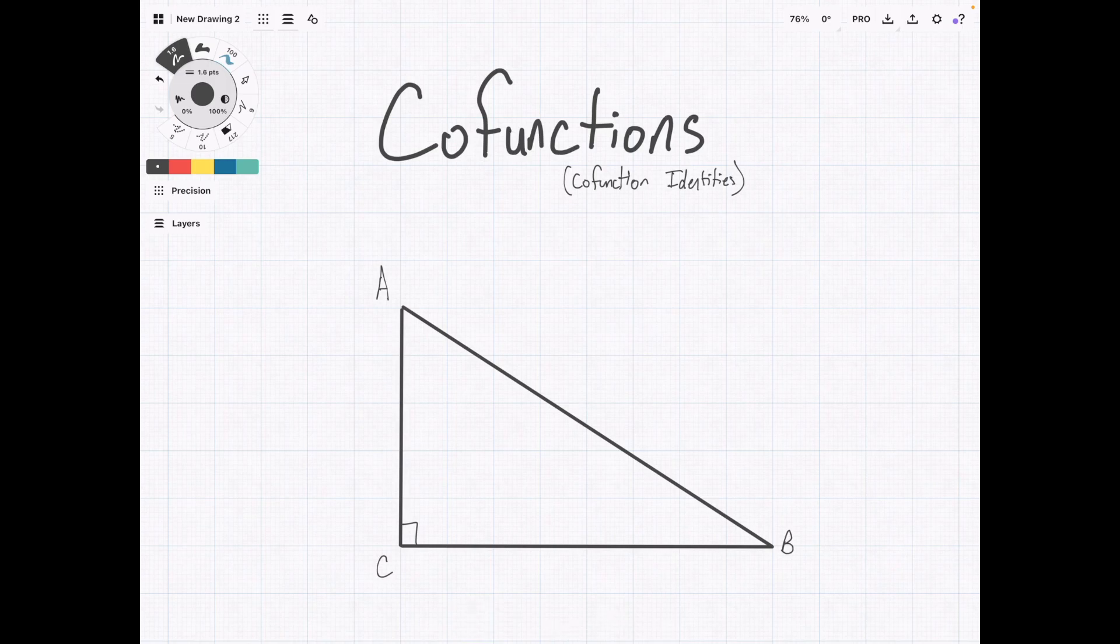So for triangle ABC, we have a 90 degree angle here, and then the angle sum property of triangles states that the sum of all the internal angles of a triangle need to add up to 180. So if we say that this angle is theta, then this angle must be 90 minus theta. So when we add them all up, it will equal 180.